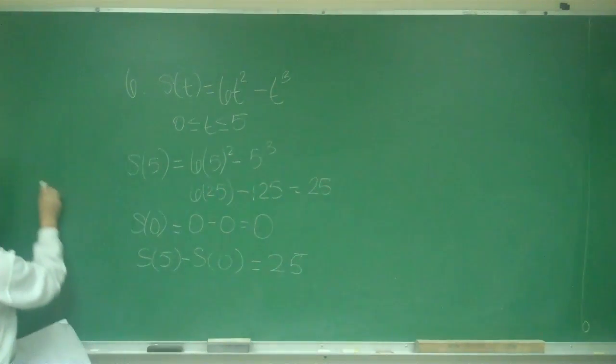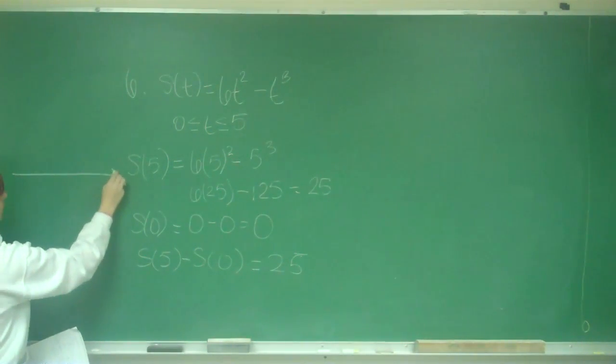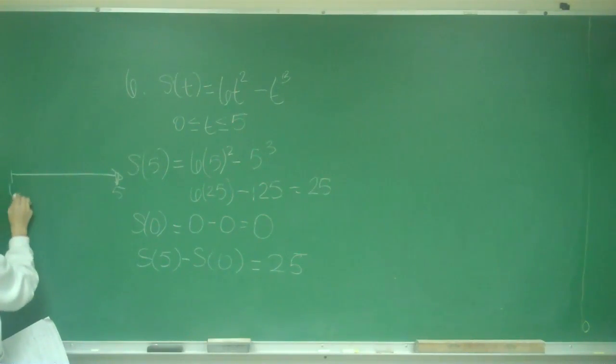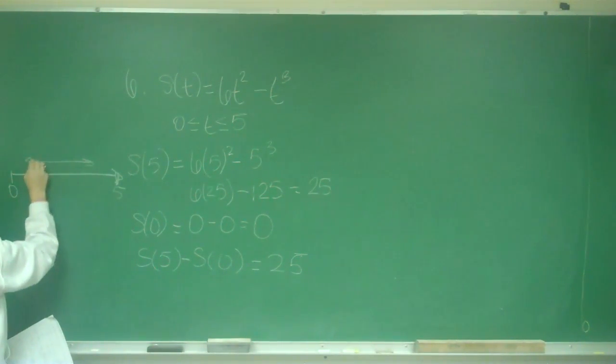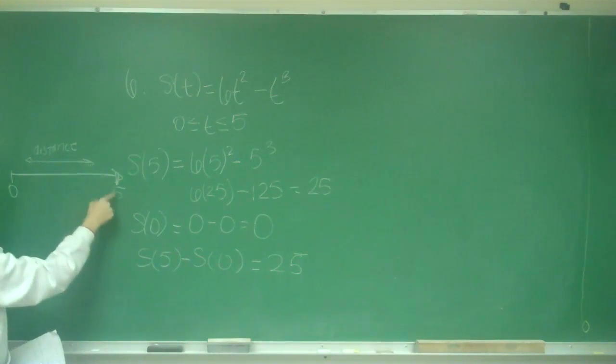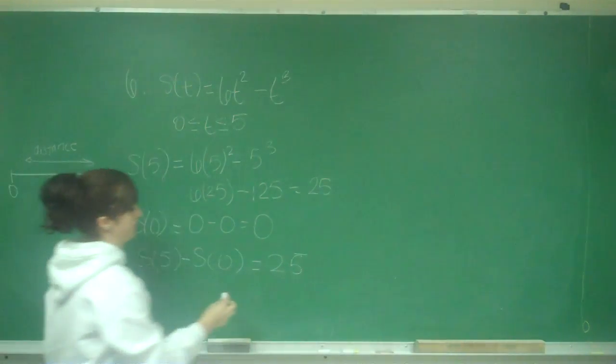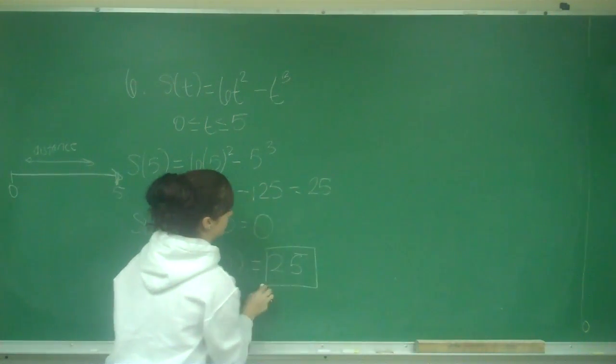So our displacement will be S of 5 minus S of 0, which will be 25. Because if you look on a line, it's at 5 and it's at 0. So to figure out how far, we need to figure out this distance. So we take this distance and subtract it from that distance, and that gives us the displacement.